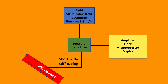At the top of the system is a flushing system — usually 0.9% saline in a pressurised bag set at 300 mmHg. The key requirement is that the pressure is higher than blood pressure, with a flow rate of 3 to 5 mL per hour. The flush system allows a high-pressure flush through the system to check for dampening and natural resonance, and also keeps the tubes patent.